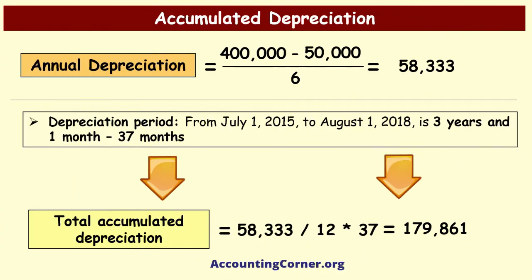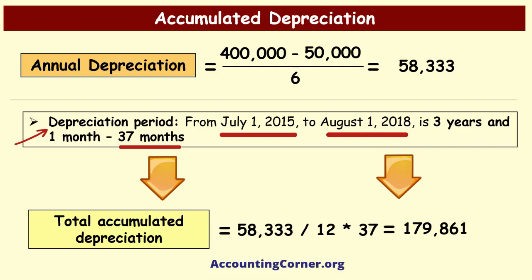In order to calculate accumulated depreciation as of the asset sales date, we need to know how long the asset was depreciated. The total time from the purchase date, July 1st 2015, to the asset sales date, August 1st 2018, is three years and one month — 37 months in total. This is the period the asset was used by the business, and depreciation has to be calculated for this period.